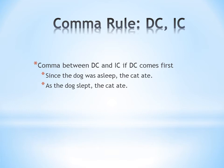Similarly, as the dog slept, the cat ate is a dependent clause followed by an independent clause. I have the same basic structure. However, the as indicates that this is a subordinate conjunction, so it's a dependent clause at the beginning followed by an independent clause, so I need a comma between them.